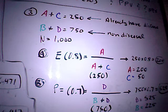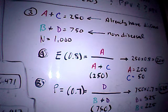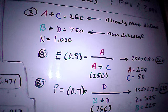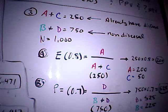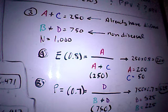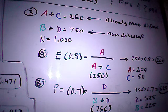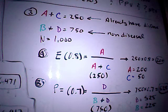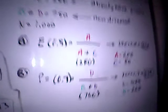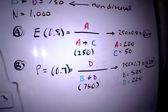So that must mean that if A plus C are people that already have the disease, then B plus D must be the people that don't have the disease. My N is 1,000 and 250 of that 1,000 have the disease, so 750 of that 1,000 must not have the disease. So now what I need to do is to figure out the individual A, B, C, and D, I need to take this information and do some basic algebra.